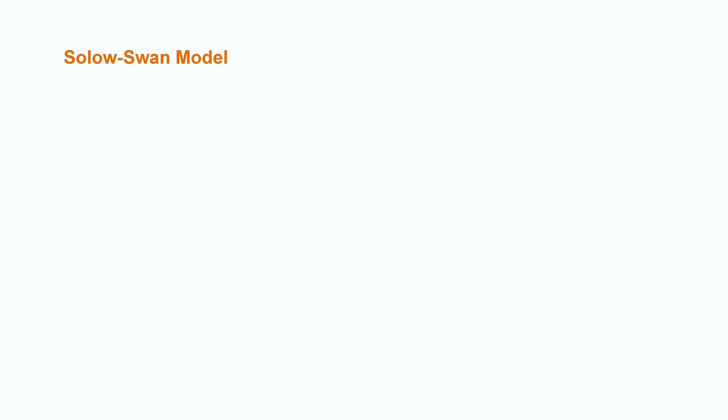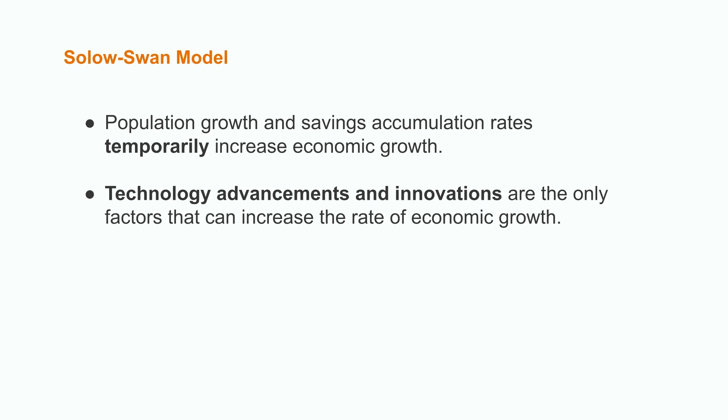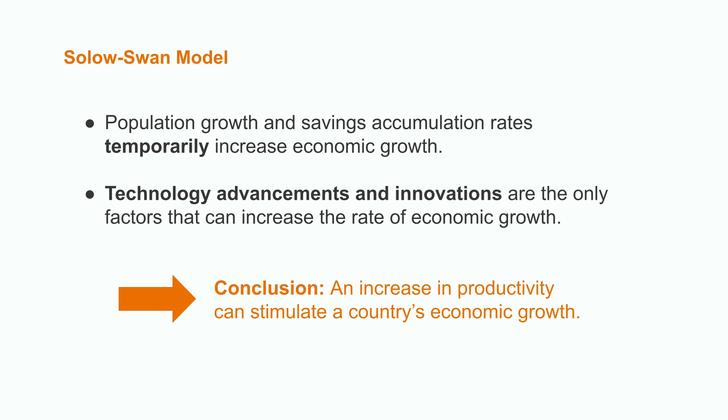So what does this tell us? The main conclusion from the Solow-Swan model states that in the long run, each country will experience a steady state level of economic wealth. This is because at first, population growth and savings accumulation rates can increase economic growth, but it's only temporary. For instance, when a country incorporates a second worker on top of its existing one, output rises sharply. However, the addition of one worker shows no increasing output when compared to an economy with thousands of workers. After that, the economy expands steadily, with GDP increasing at the same rate as employment and productivity. However, regarding the technological progress rate, technology advancements and innovations are the only factors that can increase the rate of economic growth. This model then justifies how an increase in productivity can stimulate a country's economic growth.